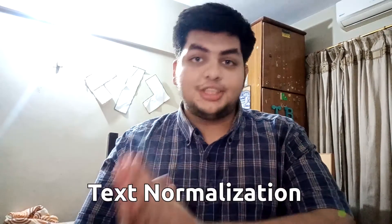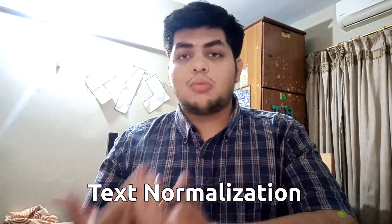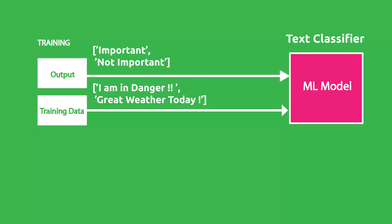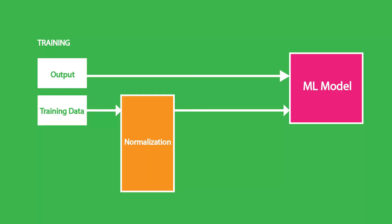When we are building systems such as text classifiers and text summarizers, we often require a very essential process called text normalization. When talking about text normalization, it's essential to know why it is necessary. Most classifiers require numerical data to learn patterns, so we need to convert or standardize our text in a form that could be fed into machine learning models. This is where text normalization comes in.